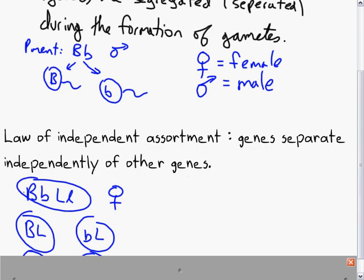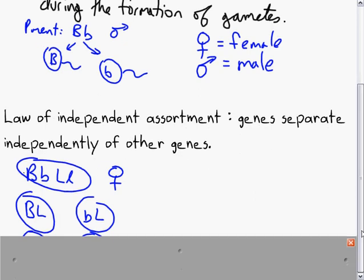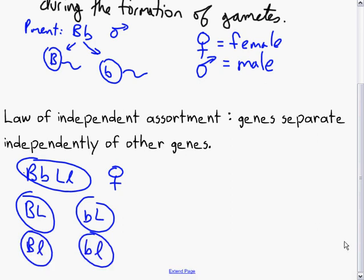What that means is that if you have this organism that has two different types of genes, dominant and recessive—say this could be for brown eyes and blue eyes—and then another pair of genes here, we're considering them all together. These will separate independently of each other.